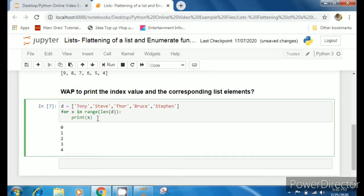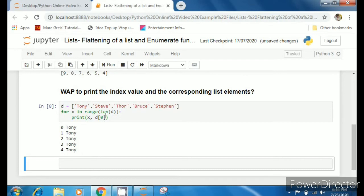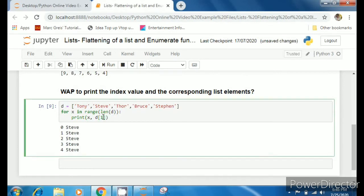Now what I'll do, I'll print the index position and the element position by writing d and in bracket 0, 1, 2, 3, or x.